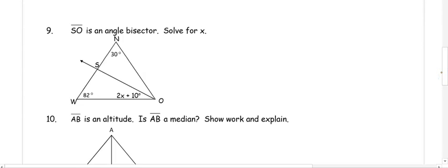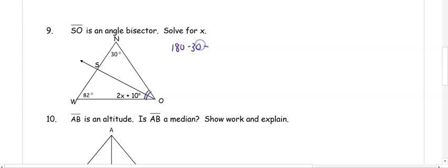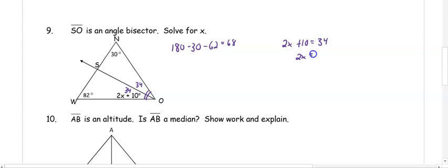In number nine, SO is an angle bisector. Solve for X. O is the bisected angle, so we subtract the two known angles from 180 to get 68 degrees. Dividing that in half gives each angle as 34 degrees. So 2X plus 10 equals 34. Subtracting 10 gives 2X equals 24, and dividing gives X equals 12.